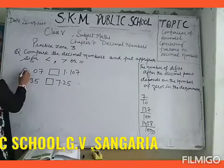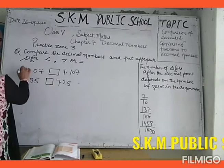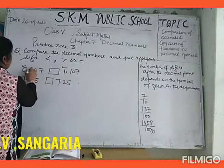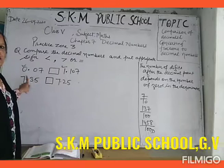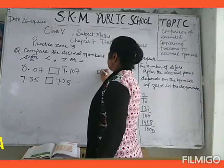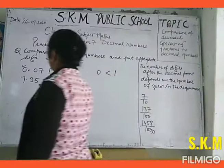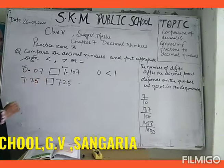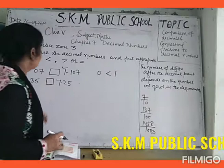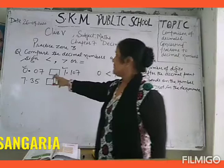If the question is 0.07, first of all we will compare the whole number before the decimal. Here the whole numbers are 0 and 1. Greater is 1. So 0 is less than 1. Naturally, 0.07 will be less than 1.107.